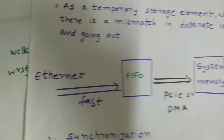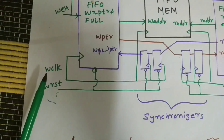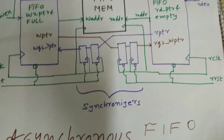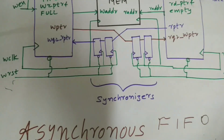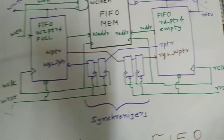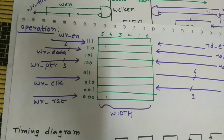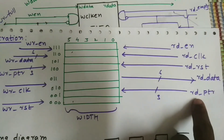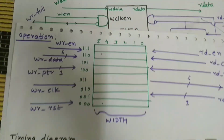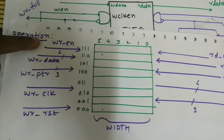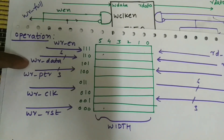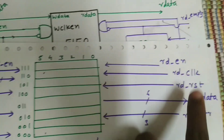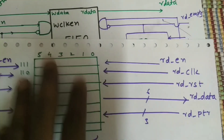The write clock controls write operations and the read clock controls read operations. This is the basic diagram of an asynchronous FIFO — the write clock, read clock, read enable, write data, write pointer, write reset, and read pointer are all interfacing signals. Whenever write enable is high, we increment the write pointer and write data according to the write clock. Whenever read enable is high, we read data from the FIFO based on the read clock.